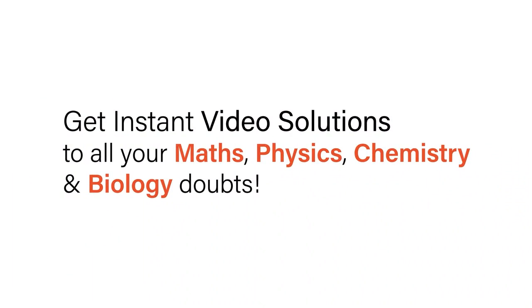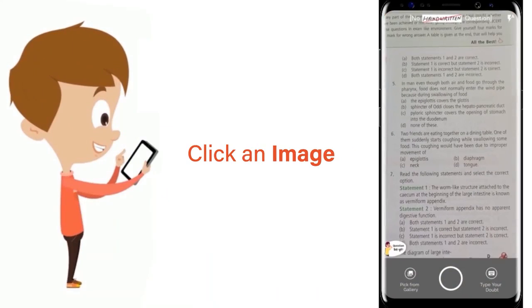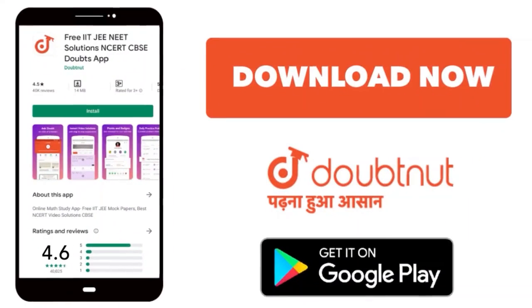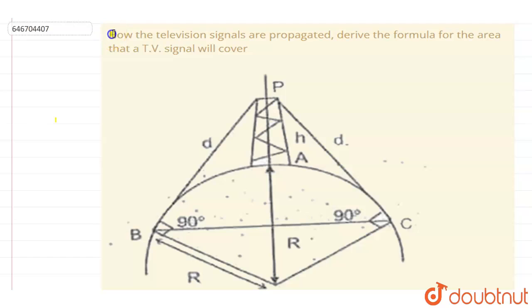With Doubtnut, get instant video solutions to all your math, physics, chemistry, and biology doubts. Just click the image of the question, crop the question, and get instant video solution. Download Doubtnut app today. Hello everyone. How the television signals are propagated? Derive the formula for area that the TV signal will cover.